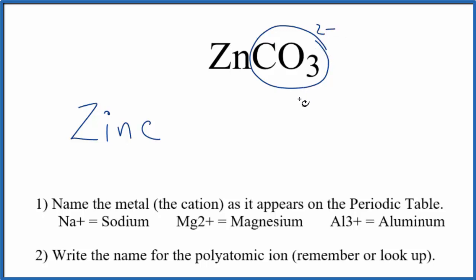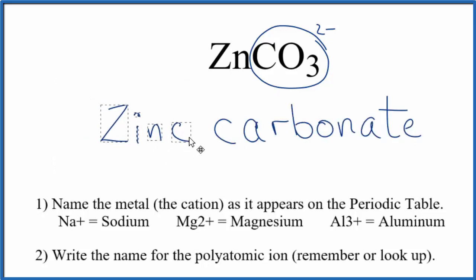Or if we're allowed, we can look that up on a table of common ions. So we have our ZnCO3. The CO3, that's the carbonate ion. We write carbonate. So the name for ZnCO3, that's zinc carbonate.